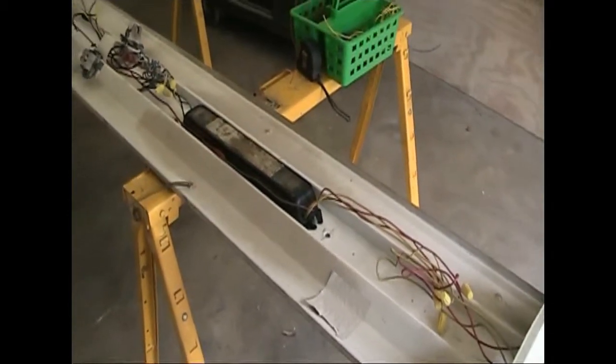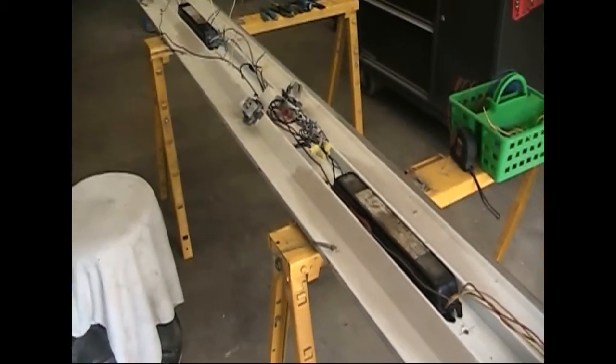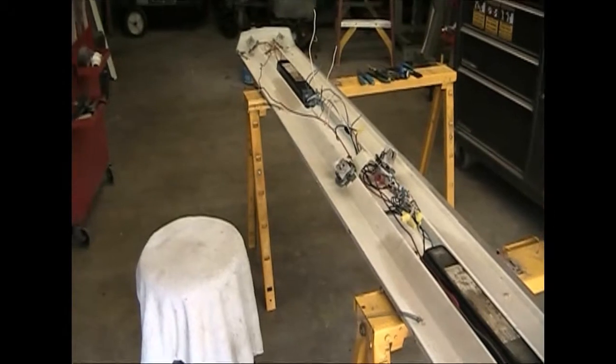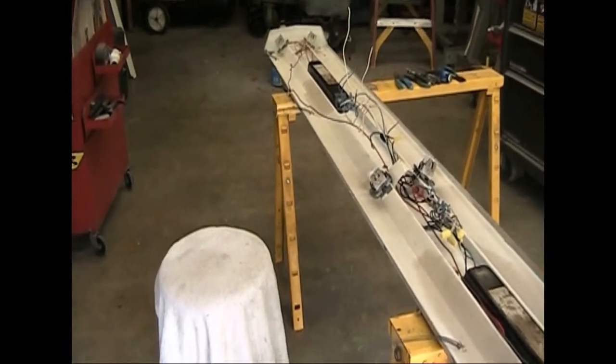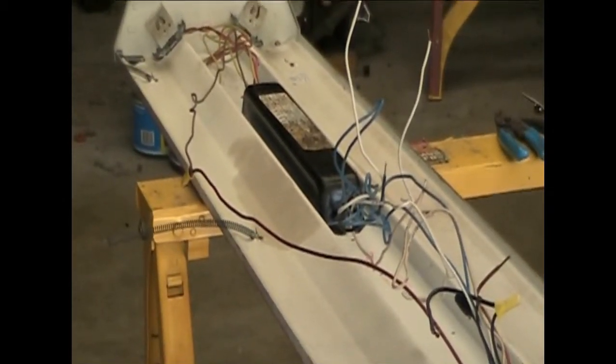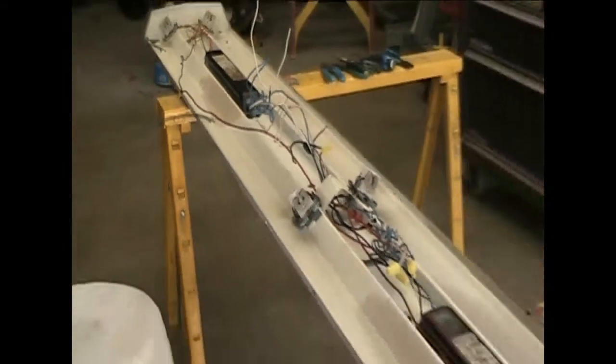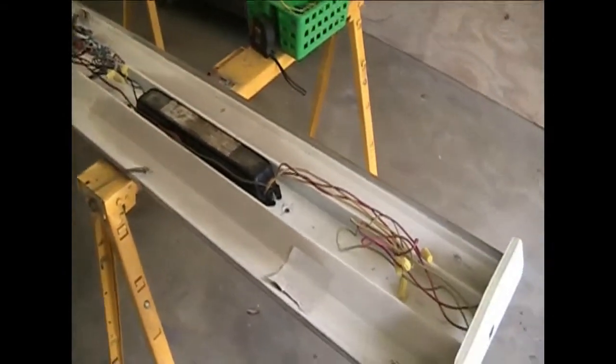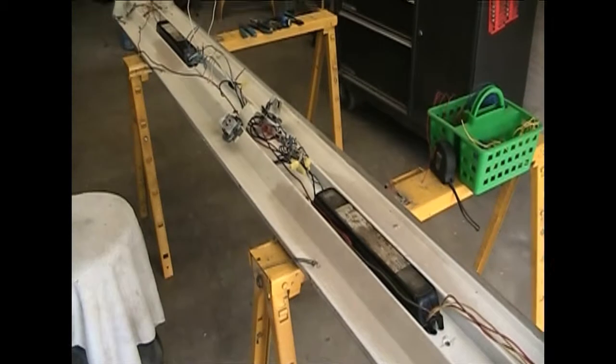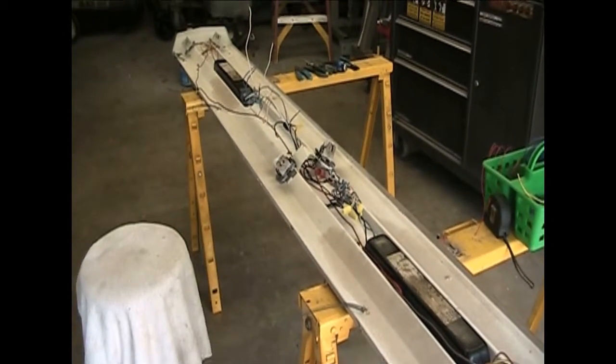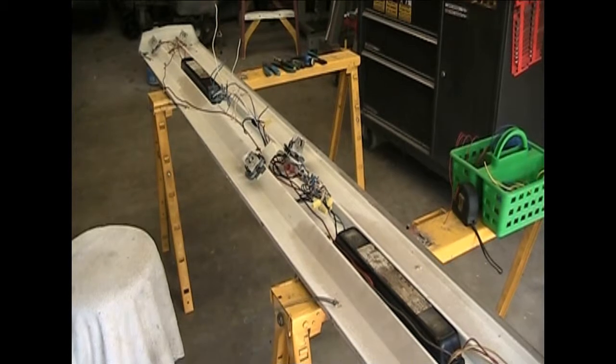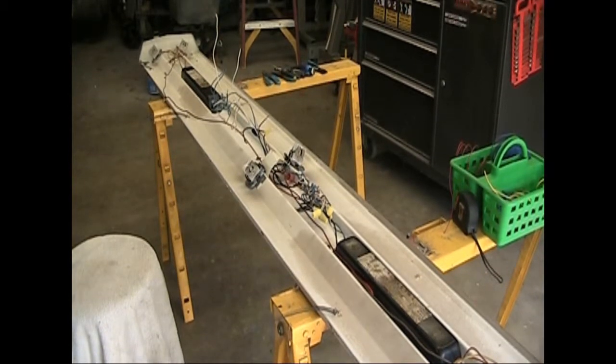Here's the fluorescent light we're going to change ballasts on. You can see there's two ballasts on this one. We're going to switch it over to one ballast running four light bulbs. Apparently these ballasts are individually controlling two each.